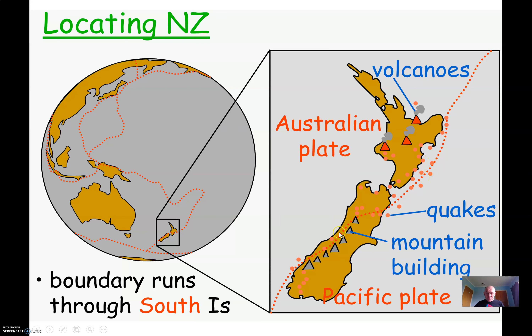The boundary runs through the South Island, which is unfortunate for Christchurch down here on the north of Banks Peninsula, and also for Kaikōura, which is around about here where the plate moves through.